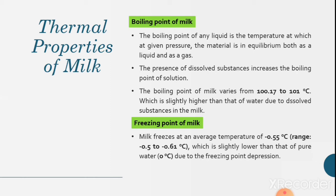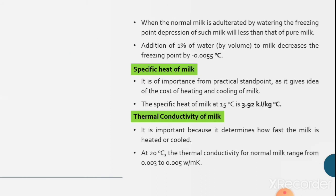The freezing point of milk is at an average temperature of minus 0.55 degrees Celsius. The range is minus 0.5 to minus 0.61 degrees Celsius, which is slightly lower than that of pure water, i.e., water has freezing point of 0 degrees Celsius due to the freezing point depression. When the normal milk is adulterated by watering, the freezing point depression of such milk will be less than that of pure milk. Addition of 1% of water by volume to milk decreases the freezing point by minus 0.0055 degrees Celsius.